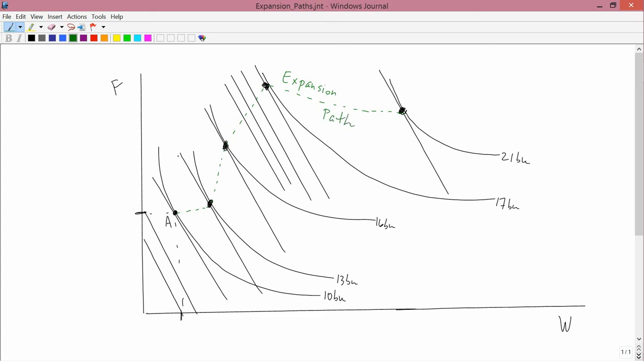So this green dashed line that I drew is called the expansion path. It's completely analogous geometrically to the income expansion path that we have for the consumer. You can see that it's usually upward sloping. So when you want to go from 10 bushels to 13 bushels, you go from point A to point B, and point B lies to the right and above point A.